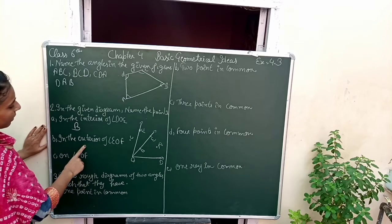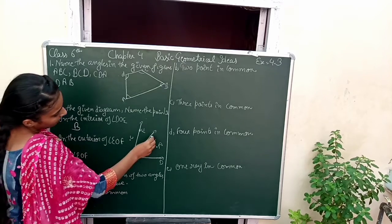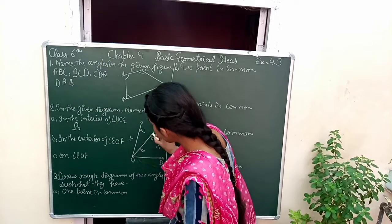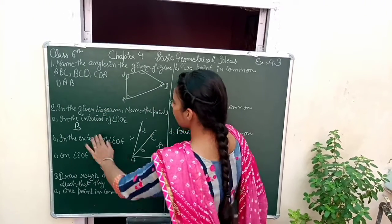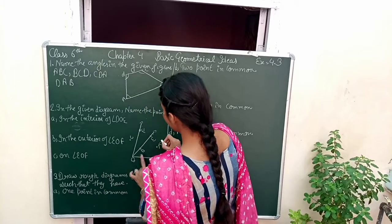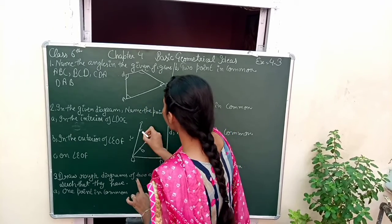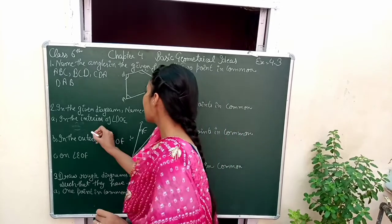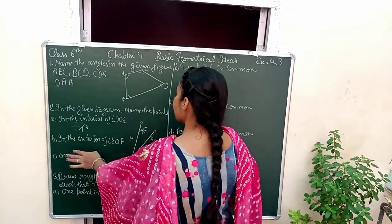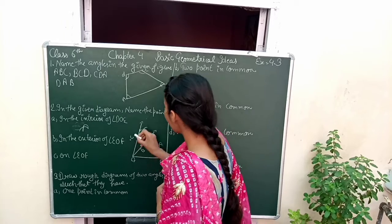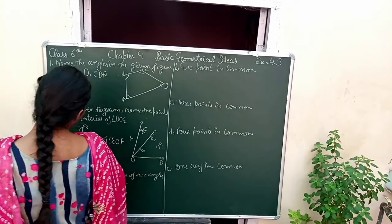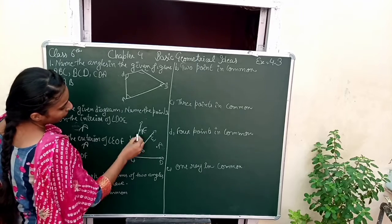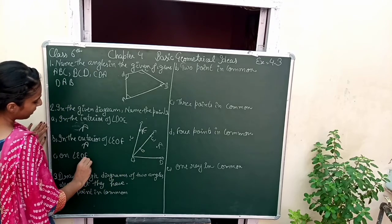Next, in the exterior of EOF. This is our F point, EOF. So DOE, exterior of EOF, this is our point A. Next, what is in the interior of EOF? Which is our point B.